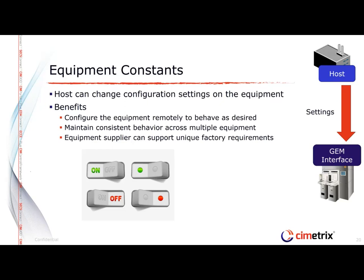GEM also allows for equipment constants — this is how you configure equipment behavior remotely, and it's particularly useful if there are a number of pieces of equipment at the factory and you want consistent behavior across all of them. Typical equipment constants on a GEM interface are things like options — for example, when a board comes in, you may have an option to have the operator stop, inspect, and confirm that it's the right board or the right lot.